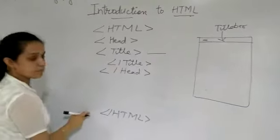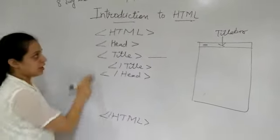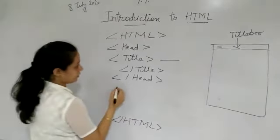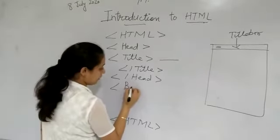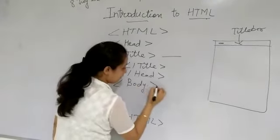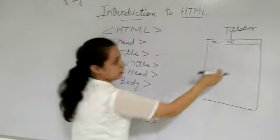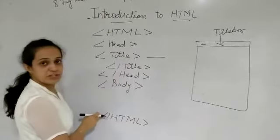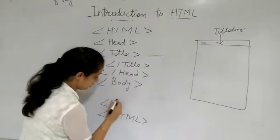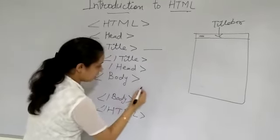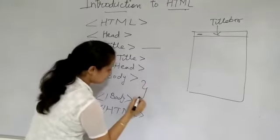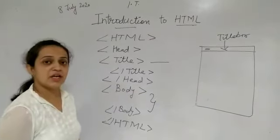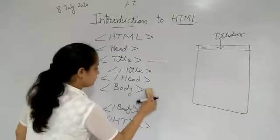All these tags are compulsory. If we skip any tag, then our HTML program will not work. Next, the main part is your body tag. Whatever the thing we want to be displayed on our web page, that has to be written within the body tag. And after this, we have to close the body tag. And in between this body tag, we have to write each and every tags.